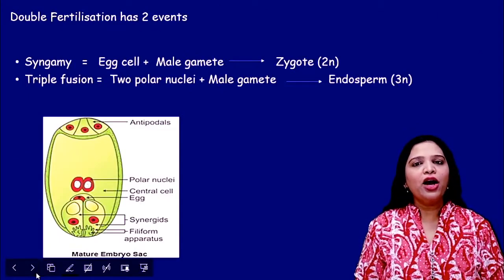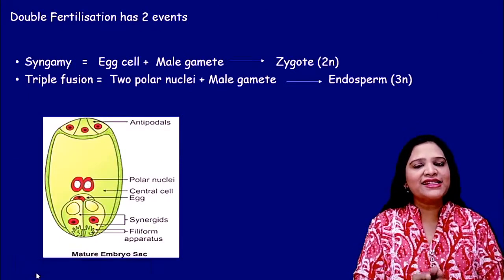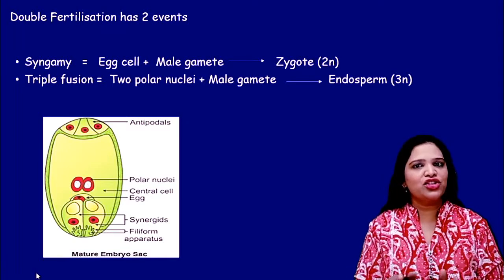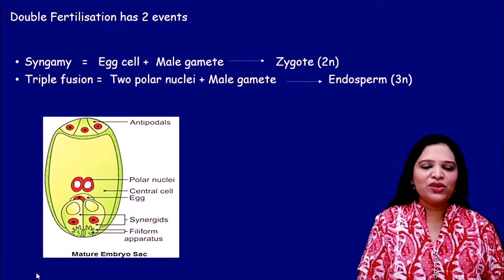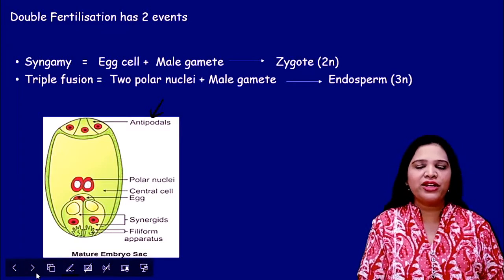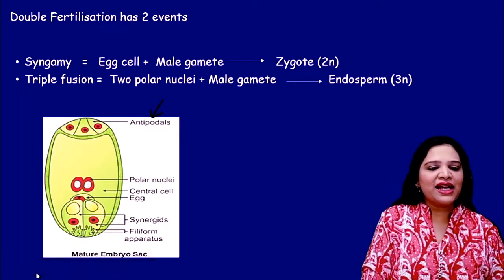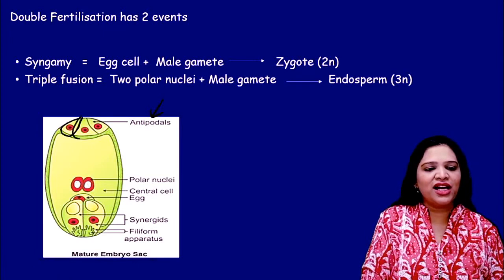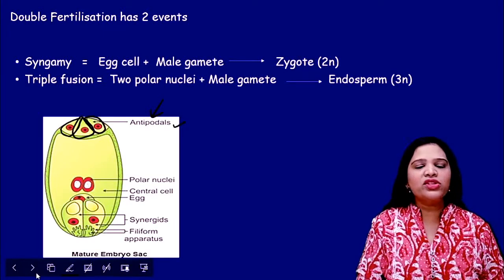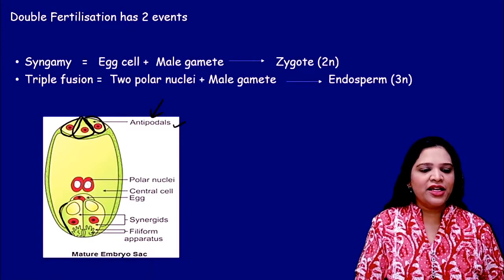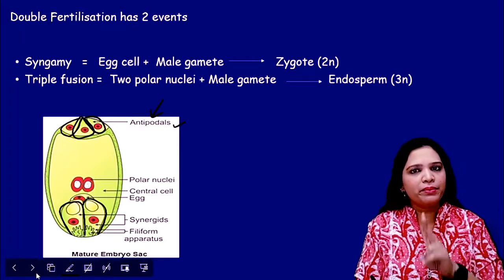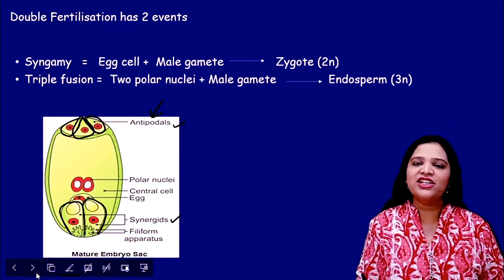To understand double fertilization, we must first know the structure of a mature embryo sac. This embryo sac has three cells in the chalazal region called antipodal cells. Opposite to them, at the micropylar end, are two big cells called synergid cells.